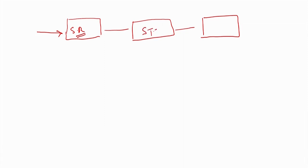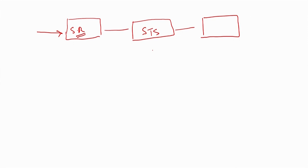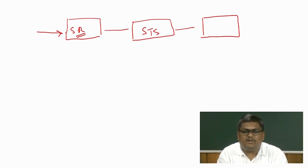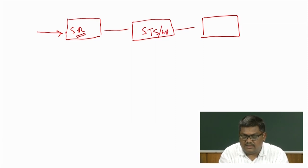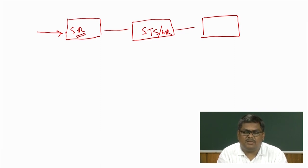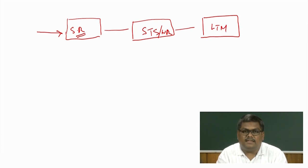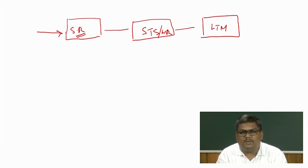Then we have something called the short-term store, which we talked about in our last lecture. This is the kind of system which holds information for brief periods of time and can hold only limited information. We also saw an extension of this concept called working memory, which is basically an improvement of the short-term store because it talks about a system with more capacity than discussed in the Atkinson and Shiffrin model. The last part we did not discuss was the LTM, or long-term memory.